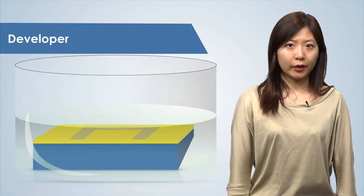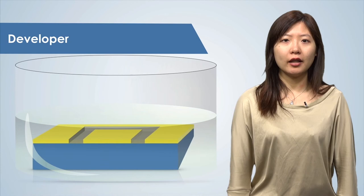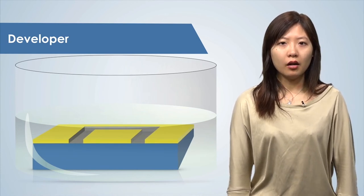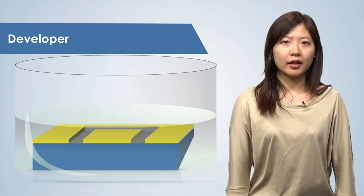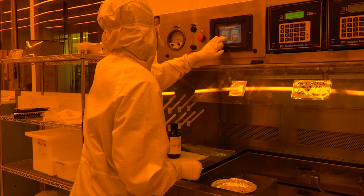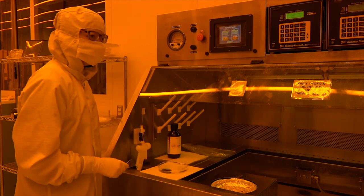The chemical developer will dissolve away the EBL resist film only in the regions that were exposed to the electron beam. All other areas of the EBL resist will remain on the wafer. To develop the wafer, we submerge it in a bath of developer designed for this EBL resist for about 2 minutes.